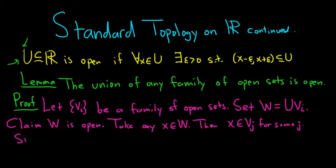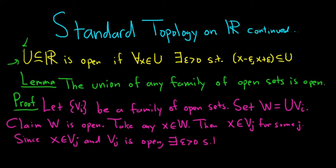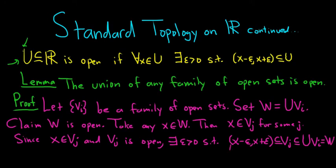Now since x is in V sub j, and V sub j is an open set, there exists some epsilon greater than zero such that there is an epsilon neighborhood about x that's entirely contained in V sub j. But V sub j is entirely contained in the union of the V_i's, which equals W. So that means this epsilon neighborhood is entirely contained in W. Given any x in W, we found an epsilon greater than zero such that the neighborhood of x is contained entirely in W.